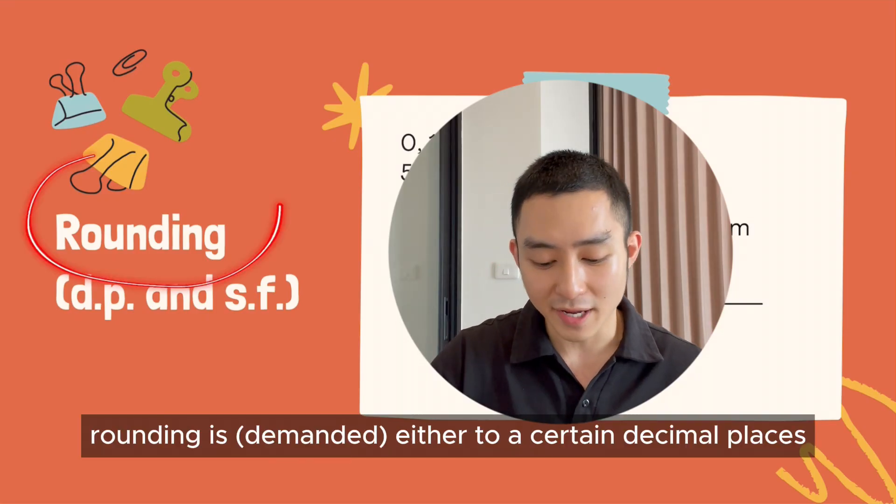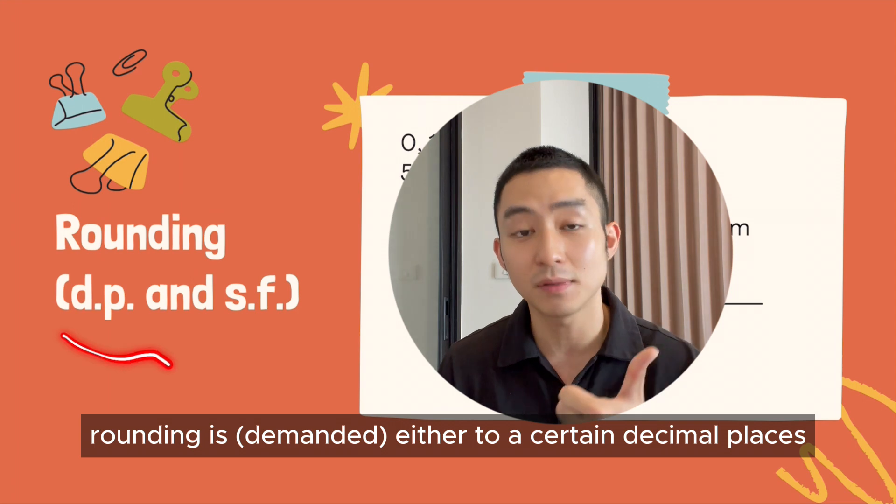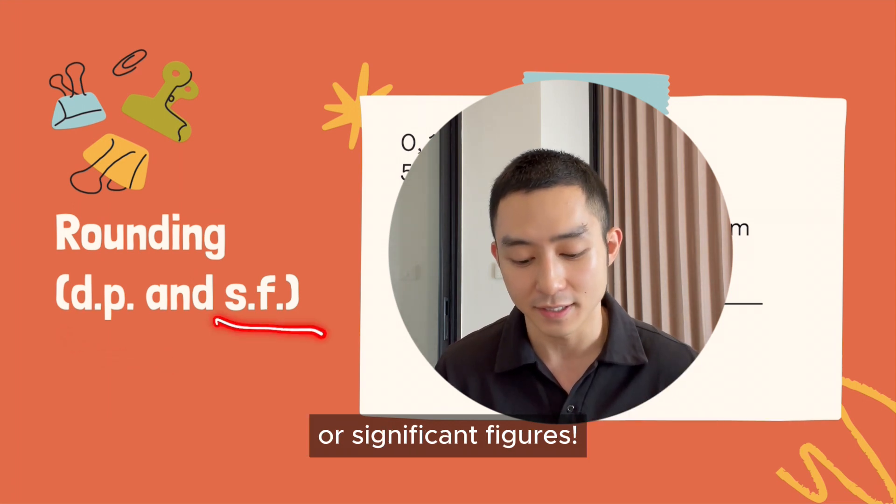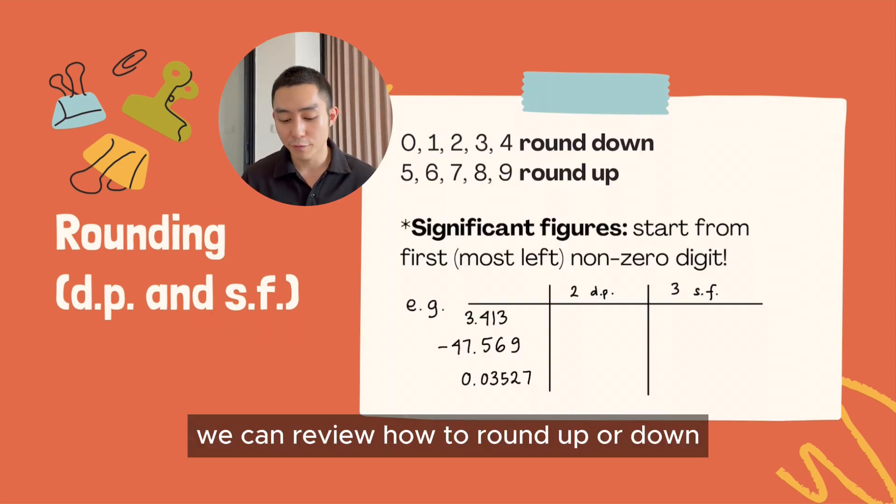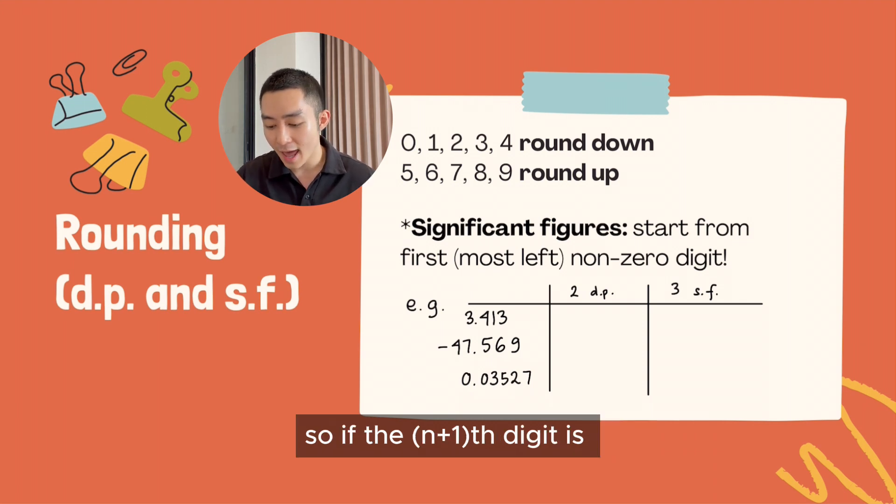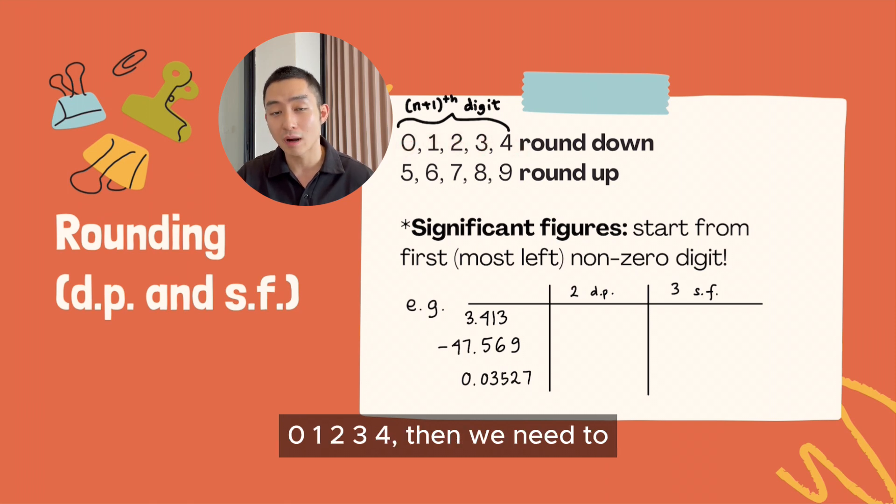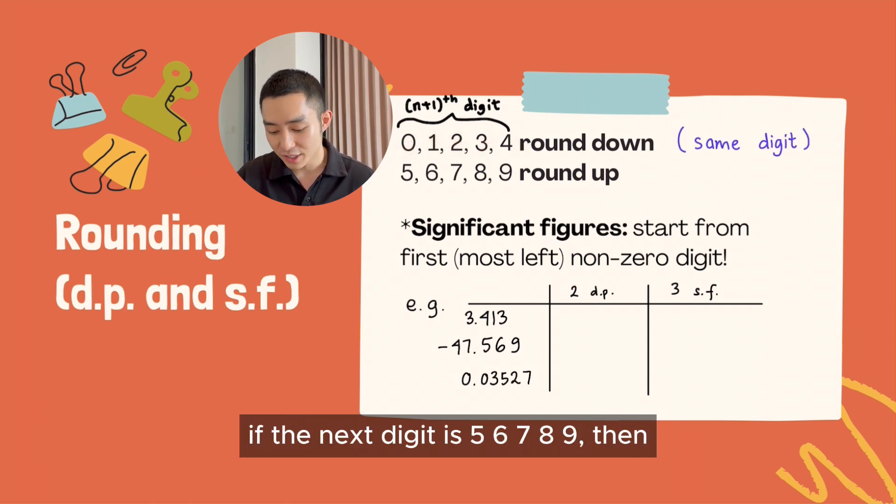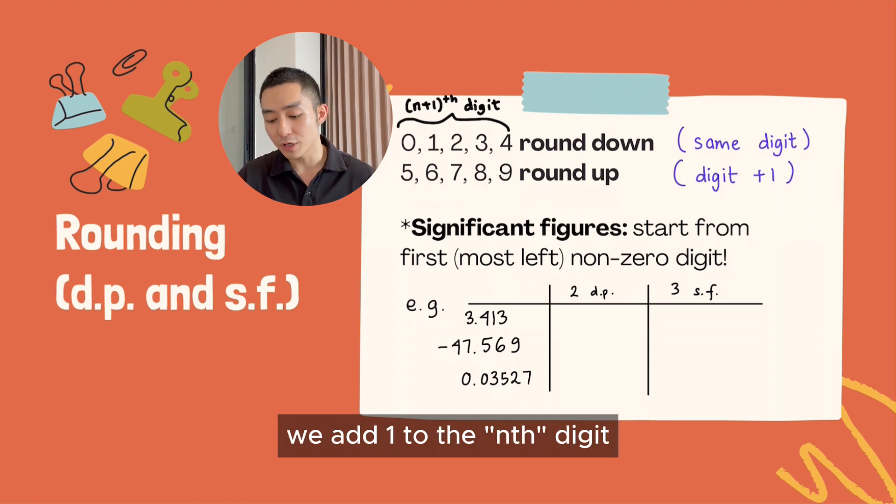On this course, rounding is either to certain decimal places or significant figures. Before going through that, we can review how to round up or down. If the (n+1)th digit is 0, 1, 2, 3, or 4, then we need to round the number down. If the next digit is 5, 6, 7, 8, or 9, then we add 1 to the digit.